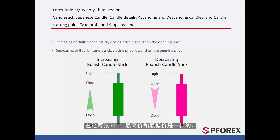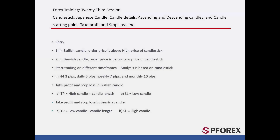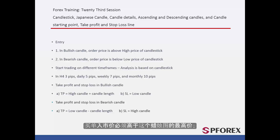High and low prices in either type are the same. Order price entry is different based on candlestick type. In a bullish candlestick, the order price should be more than the high price of the given candlestick. The buy order entry price must be over the candlestick's high price.